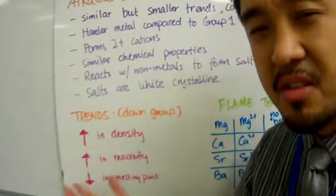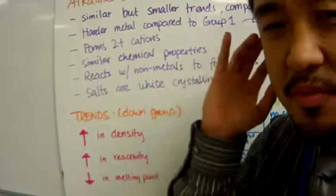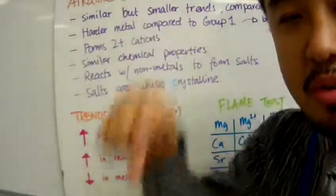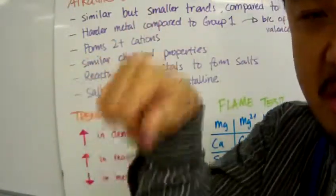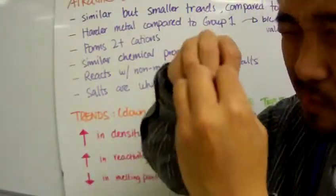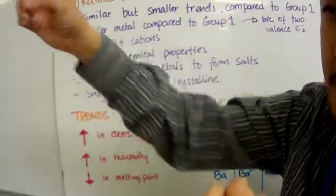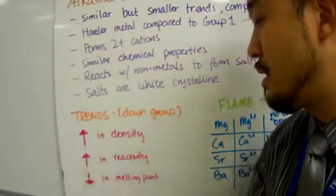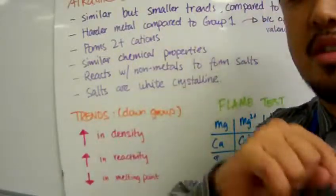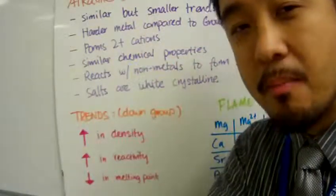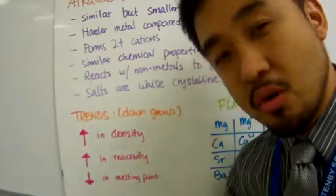Trends of alkaline earth metals are very similar to alkali metals. Density goes up when you go down the group. Reactivity also increases as you go down the group due to the valence electrons being further away from the nucleus, and the added shielding effect means more reactivity. Because of that shielding and distance, you get much lower melting points when you go down the group.